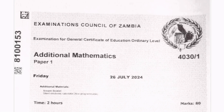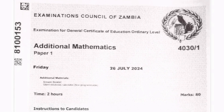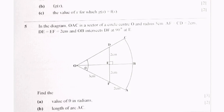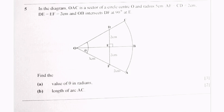Let's check where the question is located in the actual paper. This is question number 5. The question reads: in the diagram, OSC is a sector of a circle, center O and radius 5 centimeters. AF is equal to CD, which equals 2 centimeters. DE is equal to EF, which equals 2 centimeters, and OB intersects DF at 90 degrees at E.